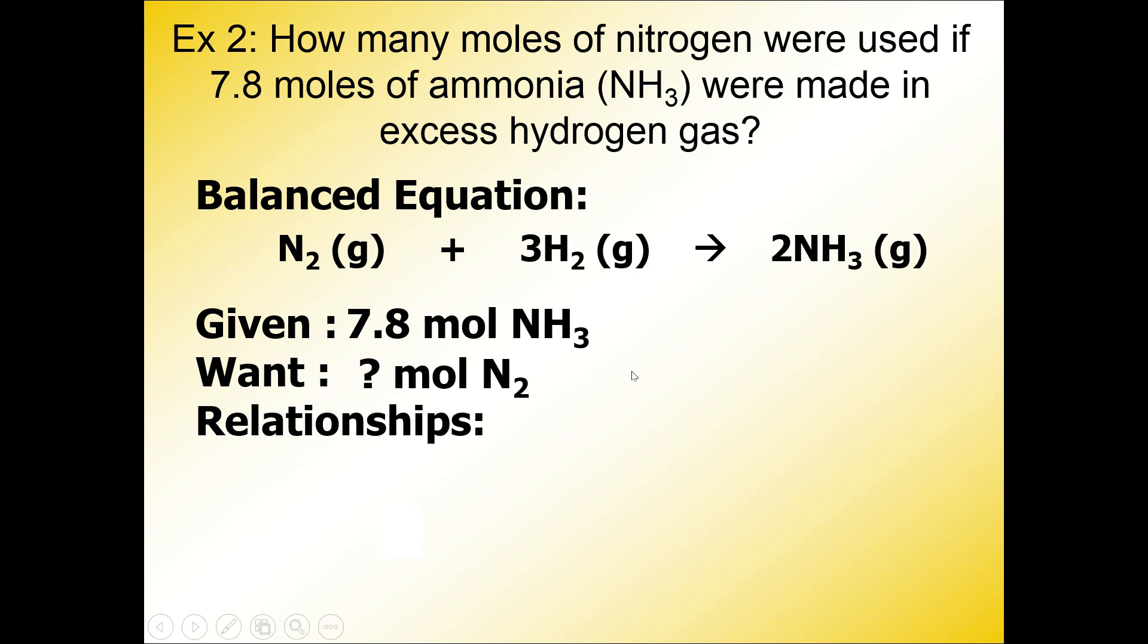In this problem, we're going to look for clues to write out our relationships or ratios. The clues are in the given and in the want. Whenever you see two different formulas, two different substances in the given and the want, that should tell you to calculate a mole-to-mole ratio between those two substances. I have N2 in the want, I have NH3 in the given, and so I'm going to take the coefficients in front of those formulas and write a mole-to-mole ratio.